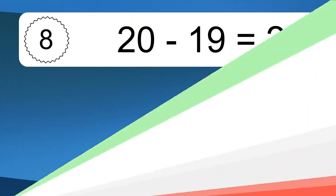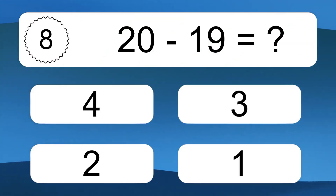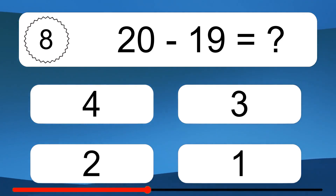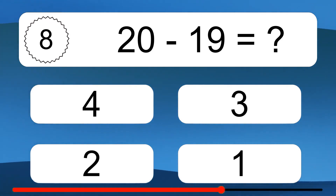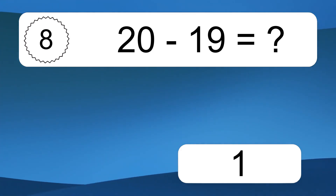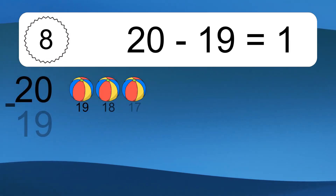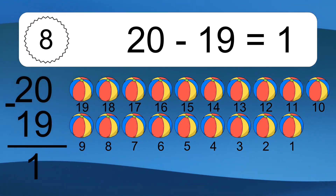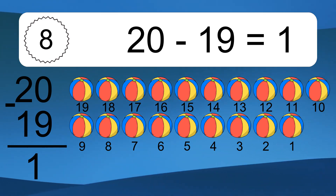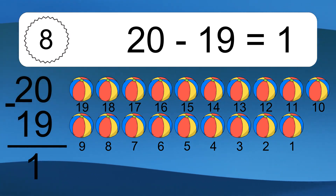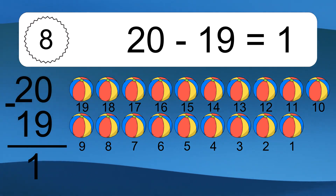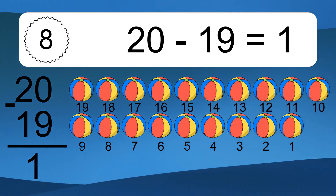20 minus 19 equals what? 20 minus 19 equals 1. Let's count it: 19, 18, 17, 16, 15, 14, 13, 12, 11, 10, 9, 8, 7, 6, 5, 4, 3, 2, 1.